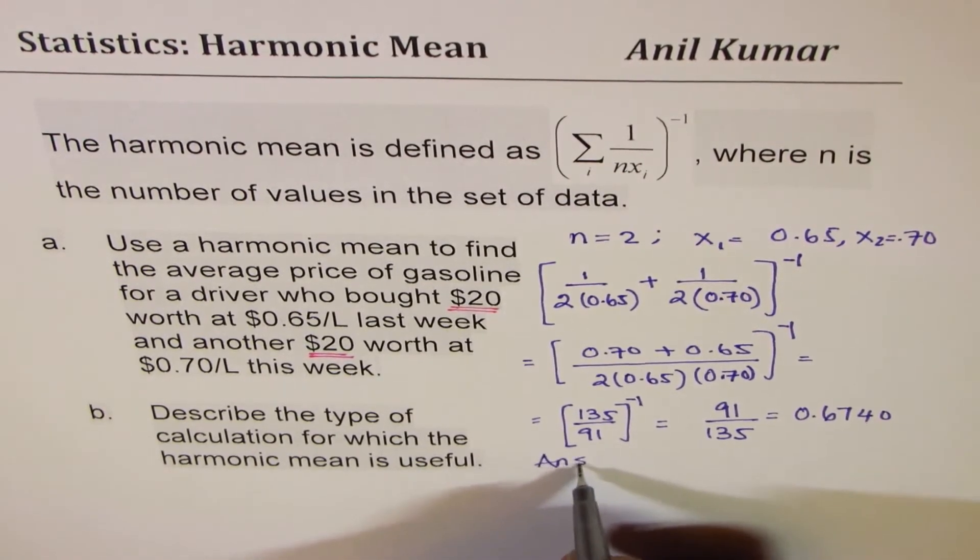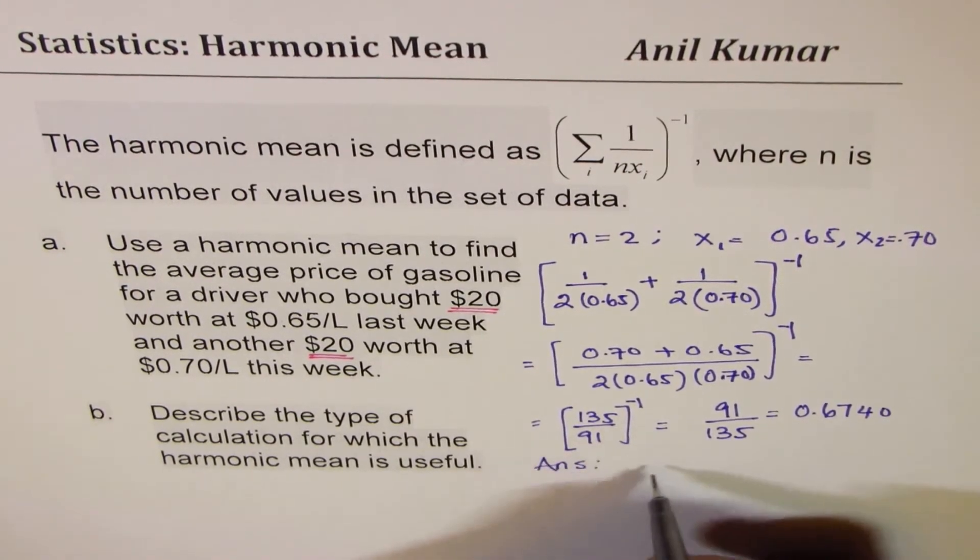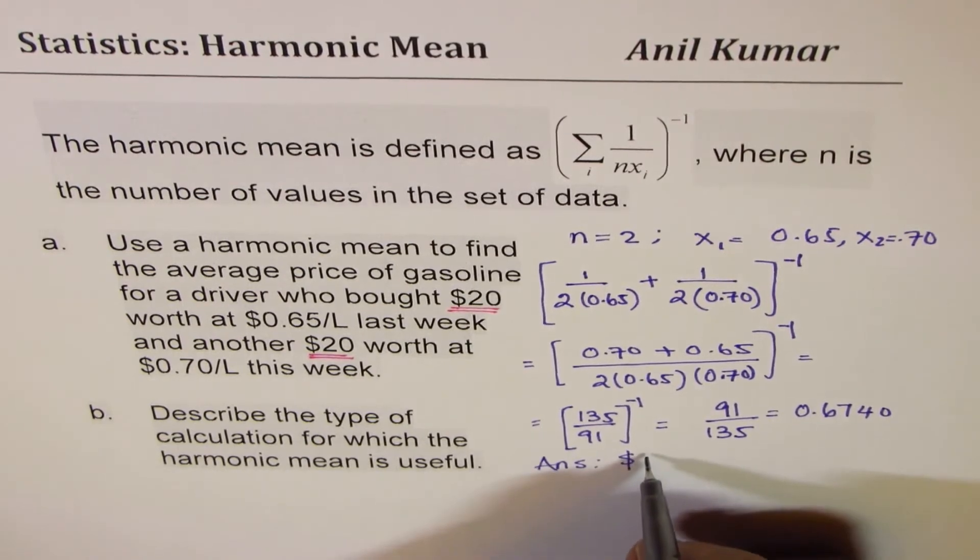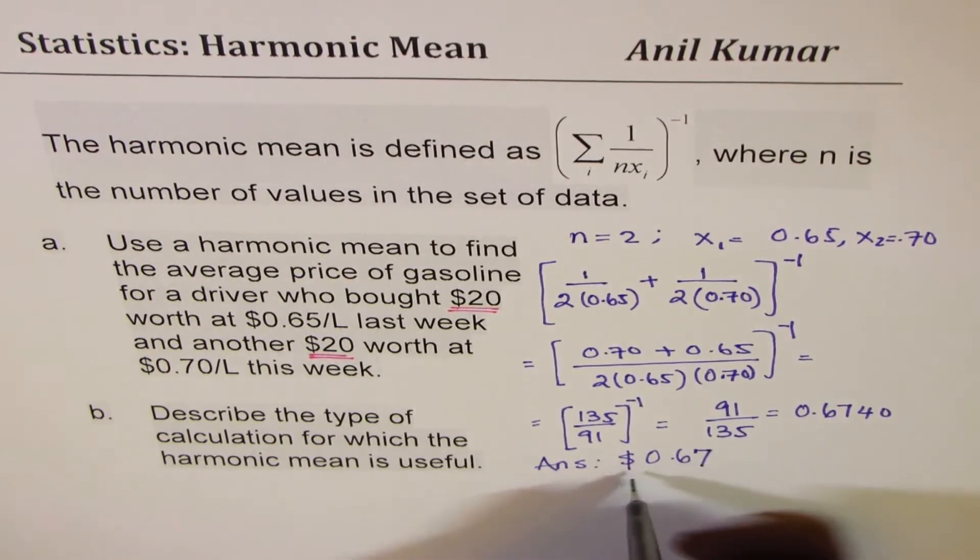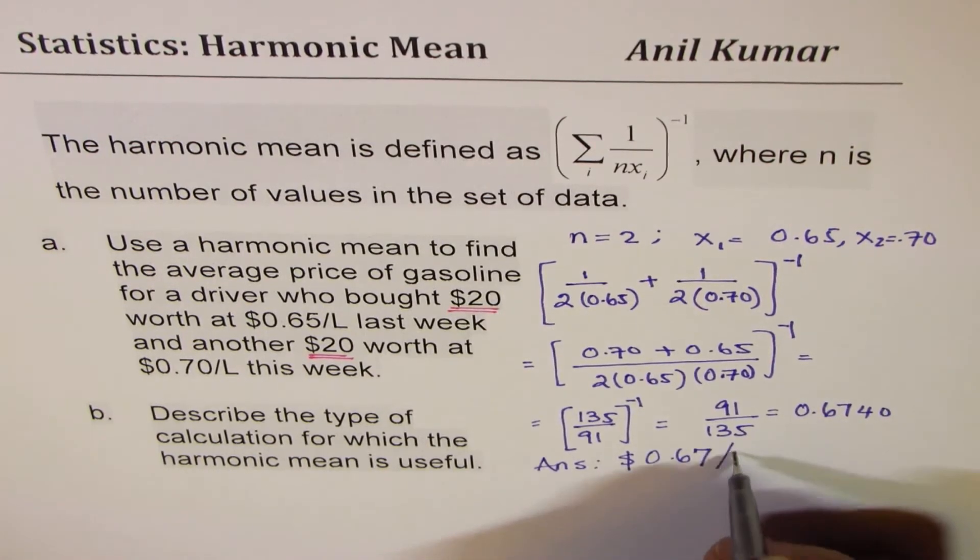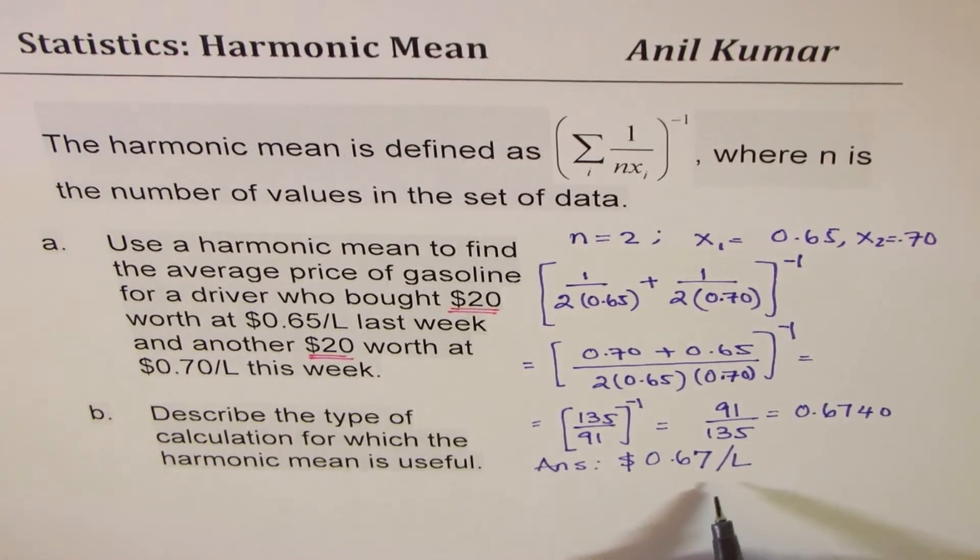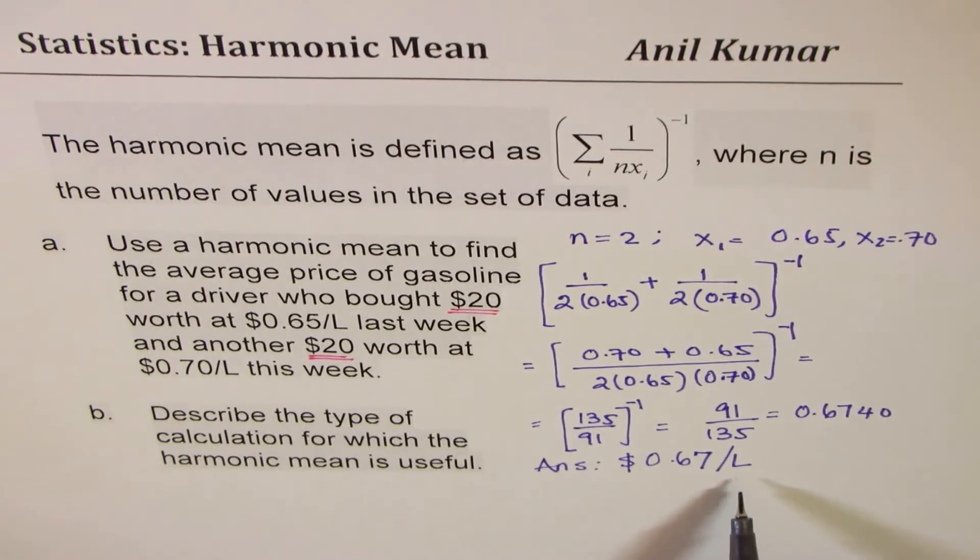So, our answer in this particular case is dollar 0.67, approximately, so many dollars per liter. So, that is how you could calculate the harmonic mean.